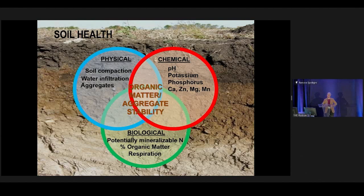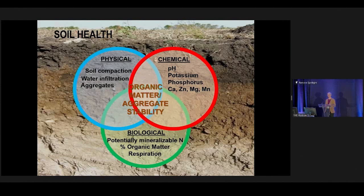Someone might say aggregates and soil structure are physical — let's talk about soil biology, that's the hot topic. But if you can't give the biology a home to live in, if the soil is very compacted, the bugs aren't going to thrive. You can add all the biology you want, but it won't foster if it doesn't have a good home. Aggregates and building soil structure come from the physical, chemical, and biological processes working together. Aggregate stability — how well soil chunks withstand impacts of wind and water — comes from a healthy soil with healthy biology. These things have to work together; we can't think of one individually.